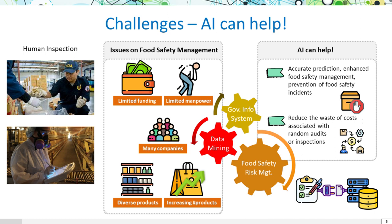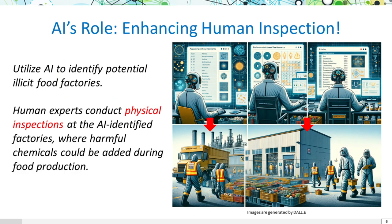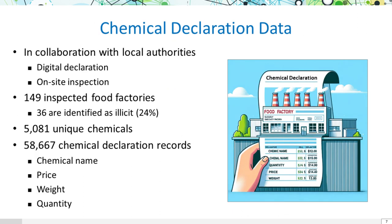While existing human inspections suffer issues such as limited manpower and funding, we believe AI can help through accurate learning to detect. We plan to use AI to spot likely illicit food factories for targeted physical checks by human inspectors. Working alongside local authorities, we've gained access to a dataset of chemical declarations from food factories, drawing from inspection records of regulatory agencies responsible for food and drug oversight.